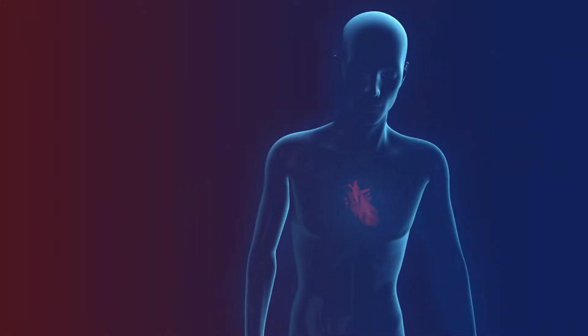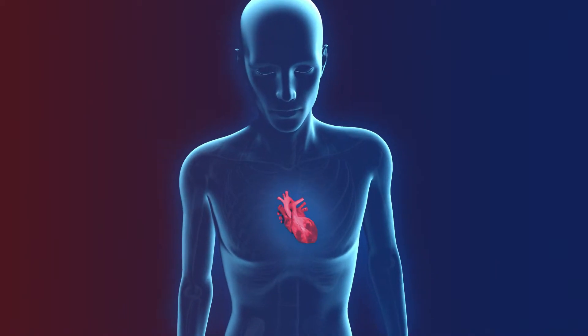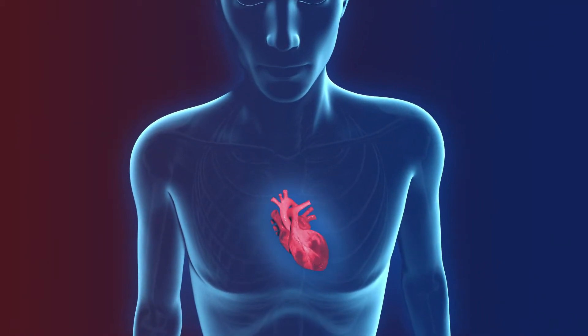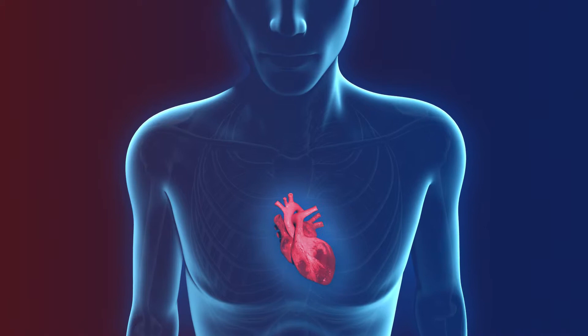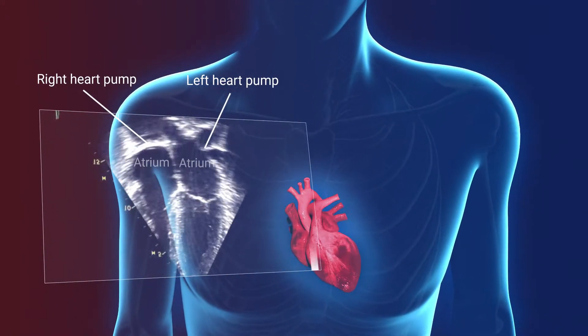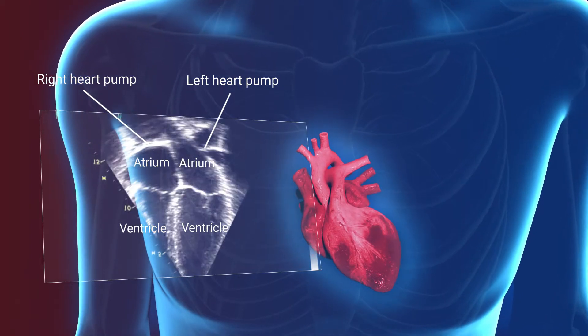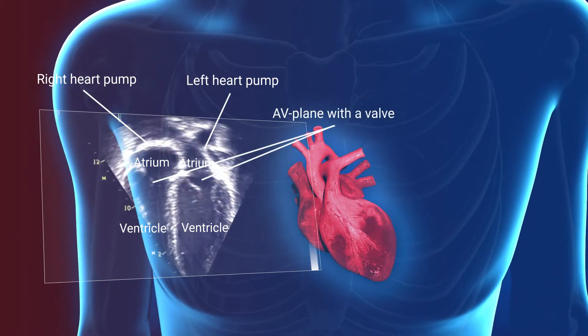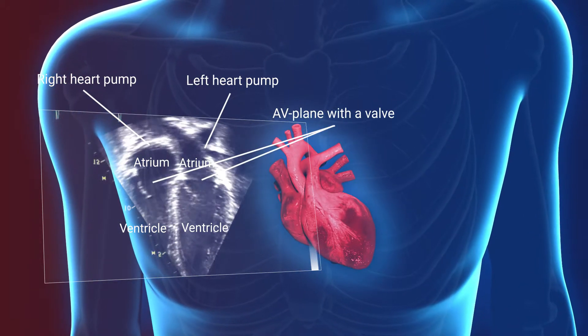The heart is an amazing organ that consists of two halves. The heart pumps blood from the right side to the lungs and from the left side to the rest of the body. Each half of the heart consists of an atrium and a ventricle, and in between, the valve plane named AV plane, which creates the main heart's pumping function.